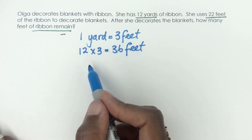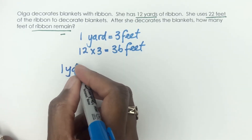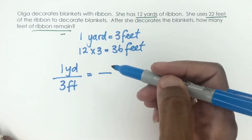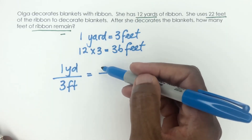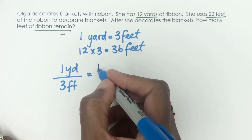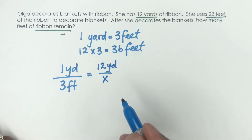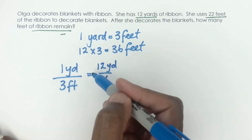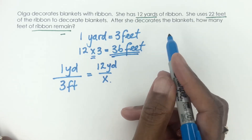Now, how do we know to multiply? You can also set up a proportion. One yard is three feet — and in a proportion you keep the same measurements aligned, so yards are on top and feet are on the bottom. One yard over three feet equals 12 yards over the unknown. So you do a simple cross multiplication: 3 times 12 equals 36. That's how we get 36 feet.